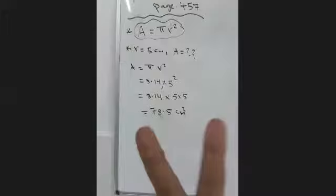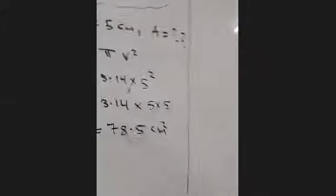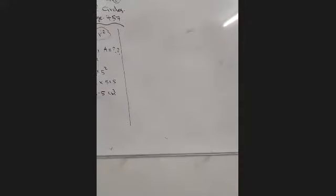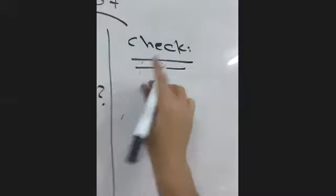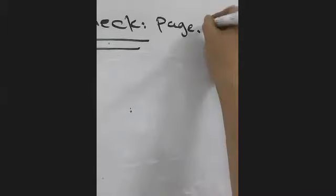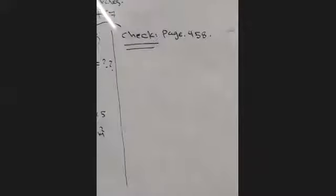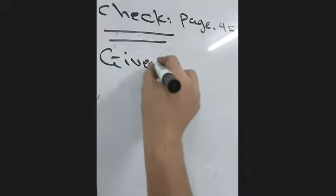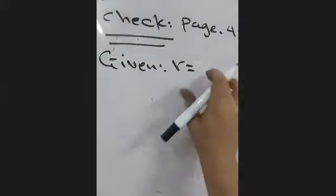The area has only one formula, but the circumference had two formulas. Now let's do the check on page 458: find the area of the circle, use 3.14 for pi, write your answer as a decimal rounded to the nearest hundredth. The given radius is 18.75 centimeters.